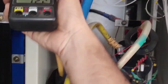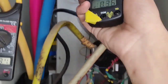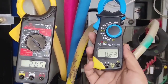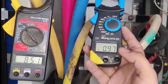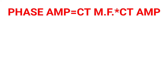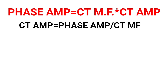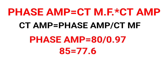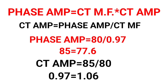Now for Y phase: connect the first clamp meter on Y phase and the second clamp meter on the Y phase CT. It is showing 85 amperes in Y phase and 0.97 amperes in the Y phase CT. Checking with both formulas: First — 80 × 0.97 = 77 amperes expected, but actual is 85 amperes. Second — 85 ÷ 80 = 1.06 amperes expected, but CT reads 0.97 amperes. Rating is not good, but within 5% tolerance range, so it could be considered.